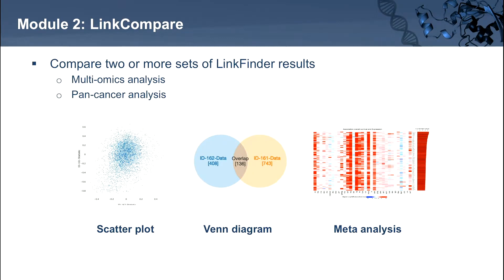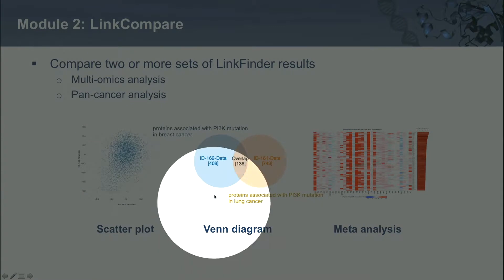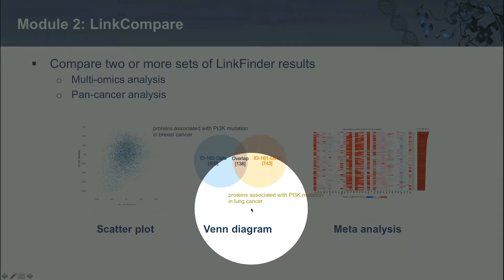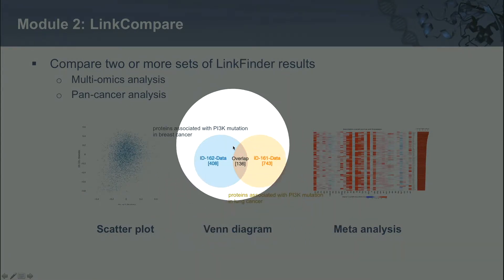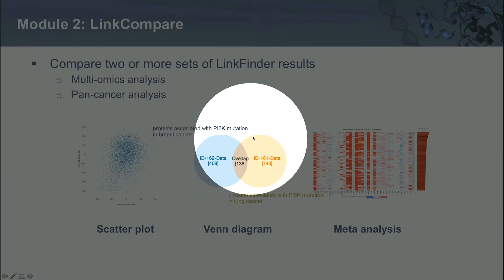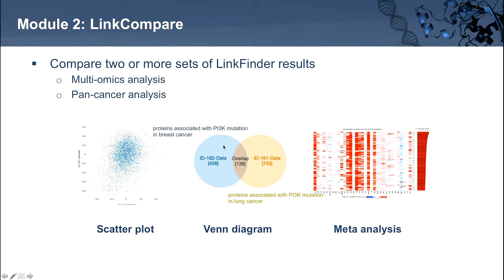The second module, LinkCompare, allows you to compare results from LinkFinder once you have performed at least two LinkFinder analyses, provided the target data set was the same. For example, we could look at proteins associated with PI3 kinase mutation in breast cancer and compare them with proteins associated with PI3 kinase mutation in lung cancer. LinkCompare would determine which proteins are in common for both cancer types and which are unique to one or the other.